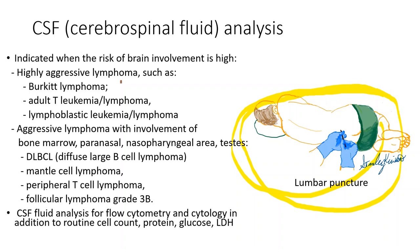Lumbar puncture to analyze cerebrospinal fluid is done when patients have a highly aggressive lymphoma like Burkitt's lymphoma, or when patients have aggressive lymphoma like diffuse large B cell lymphoma with bone marrow involvement, or paranasal, pharyngeal, or testis involvement.